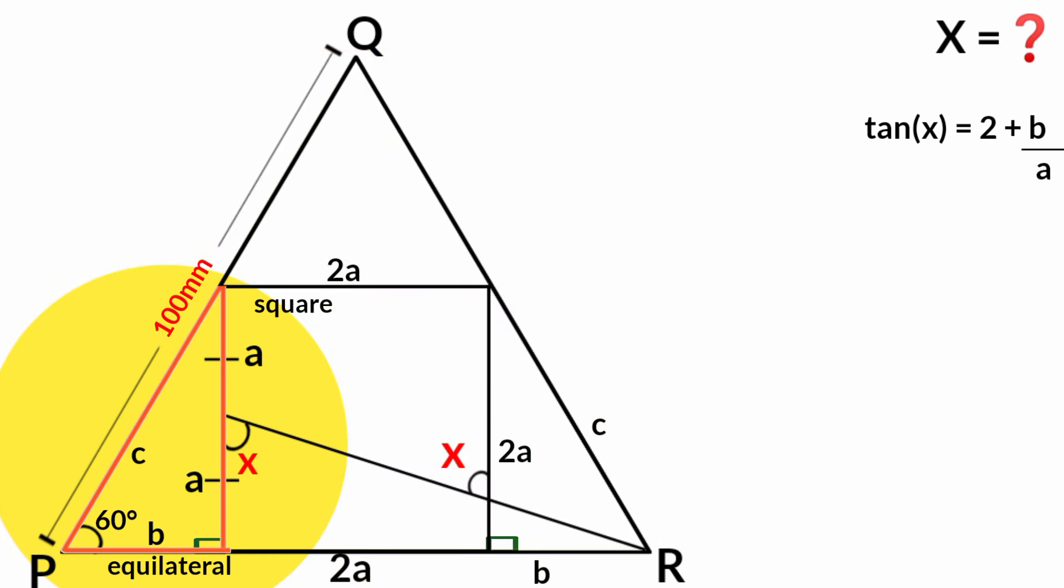Now from this right angle triangle, if we use the SOH CAH TOA, taking this as theta, there is the opposite and there is the adjacent. Here tan theta equals opposite over adjacent. Theta is 60 degrees, opposite is 2a and adjacent is b. So tan 60 degrees equals 2a over b.